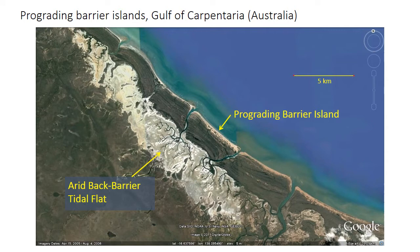A lot of modern barrier islands occur on transgressive coastlines, so many facies models assume retrogradational facies stacking. That's not necessarily the case. Here's an example from the modern of a prograding barrier island complex — the arid tidal flat in the back and the barrier island, with the modern beach visible and the ridges behind it being former beach ridges as the barrier island has prograded outwards. Many ancient barrier islands known from the rock record are also progradational.